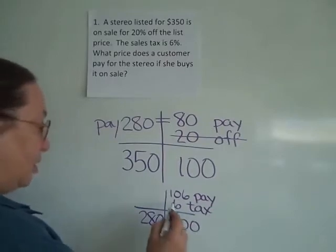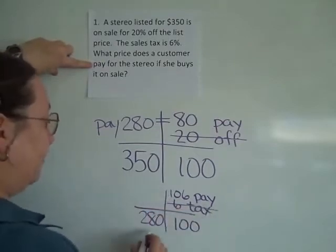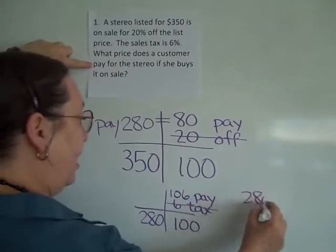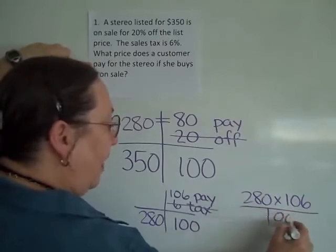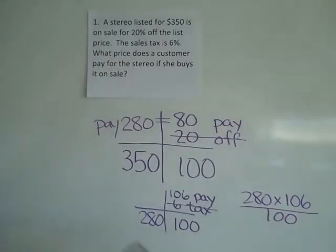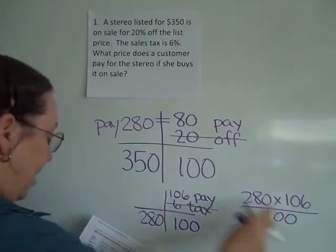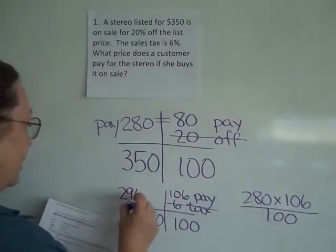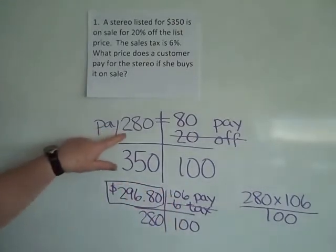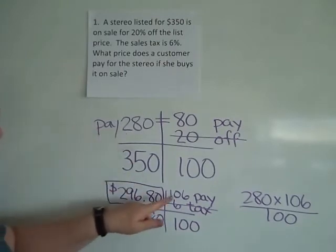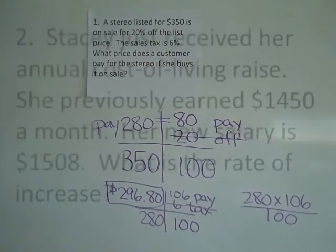My 100 is here, so what am I looking for? What price will I pay? I'm not going to use the 6. I'm going to take 280 times 106 divided by 100. Using a calculator, 280 times 106 divided by 100 gives $296.80. So the sale price was $280, and adding on 6% tax gives a $296.80 total cost.